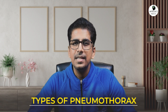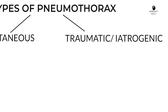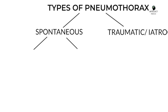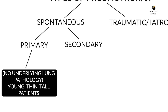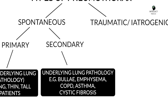Talking about the types, pneumothorax is categorized into two main types: spontaneous pneumothorax, and the other is either traumatic or iatrogenic. Under spontaneous pneumothorax we have two subcategories: primary and secondary. Primary pneumothorax means there is no underlying pathology of the lung, and it is usually seen in young, thin and tall patients. Secondary pneumothorax happens whenever there is underlying lung pathology, such as bulla, emphysema, COPD, asthma, or cystic fibrosis.